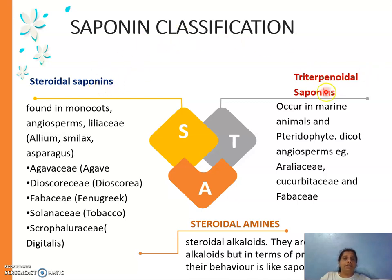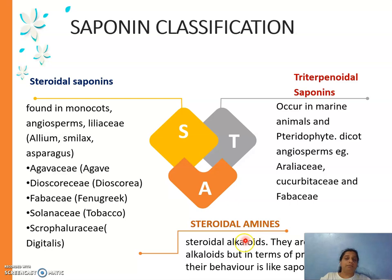So steroidal saponins and triterpenoidal saponins are the two main classes. There is also a third class called steroidal amines — these are steroidal alkaloids that behave like saponins. They are nitrogen-containing compounds, so they are also called pseudo-alkaloids. We will cover them under the alkaloids chapter.